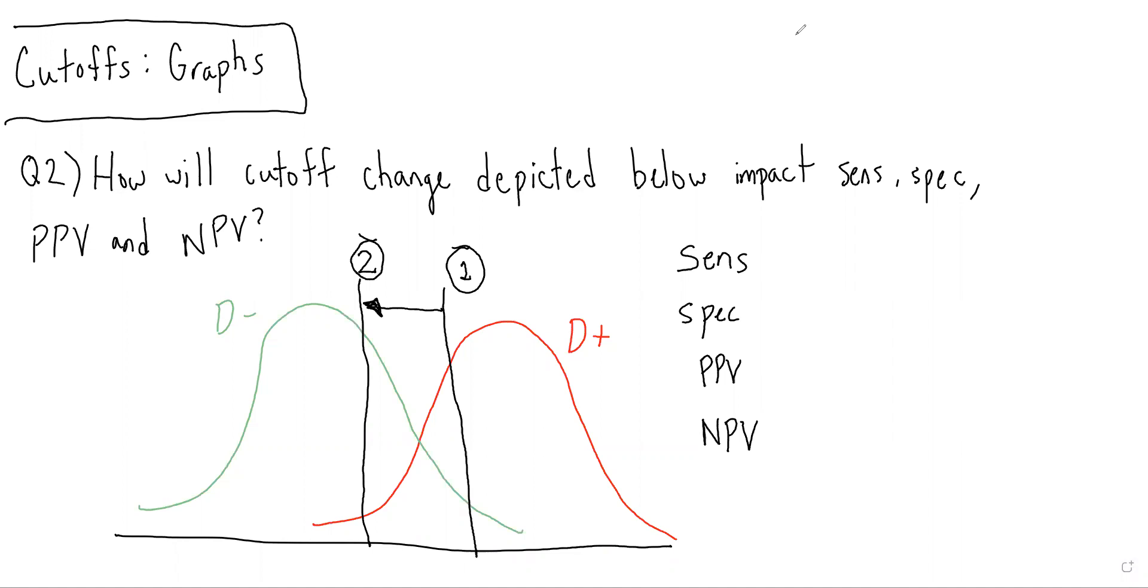So in this case, we're being asked how will the cut-off change depicted below impact sensitivity, specificity, PPV, and NPV? We can see that the cut-off is being moved from one to two, so it's becoming less extreme, more to the left.